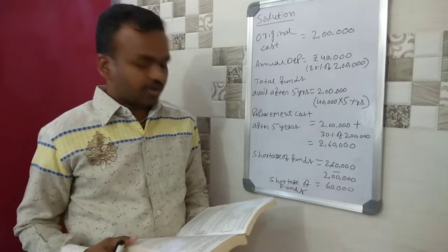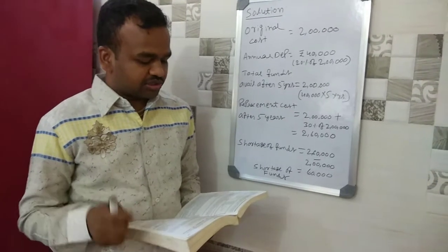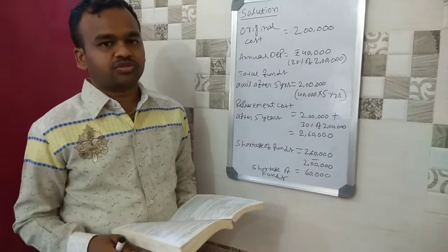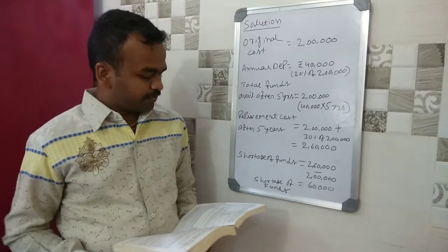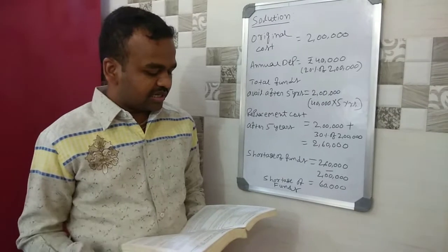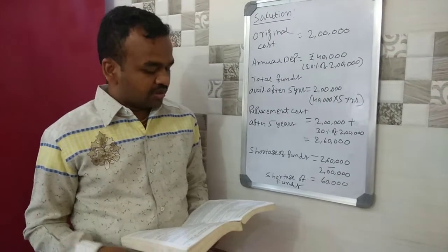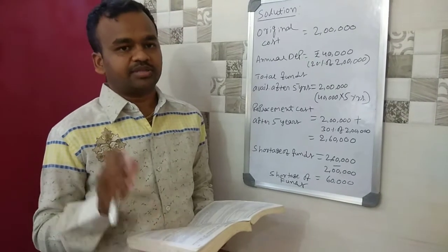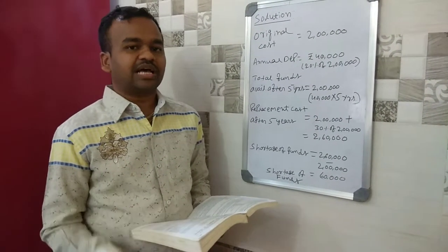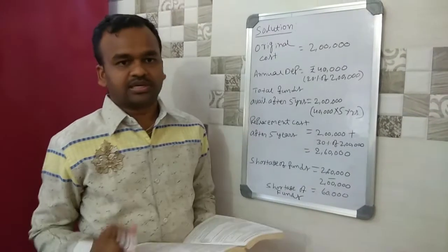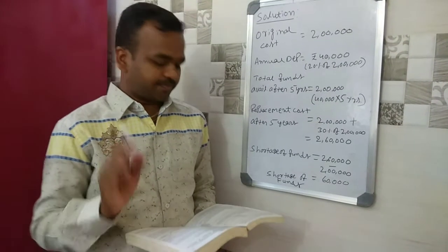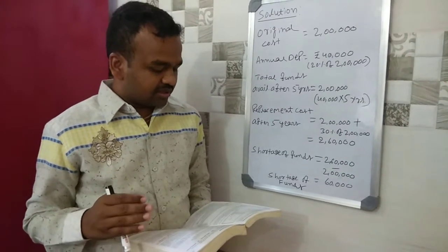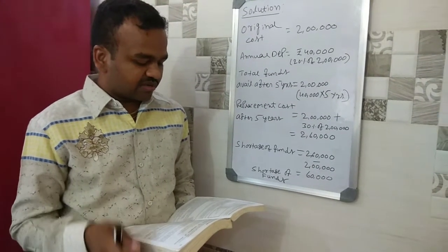Look at the example. A machinery was purchased on January 1st, 2008 for Rs. 2,00,000. Depreciation has been provided on machinery at 20% on original cost method — that is, the same acquisition cost value at which it was purchased. Over a period of 5 years, there has been a rise of 30% in the cost of identical machinery.